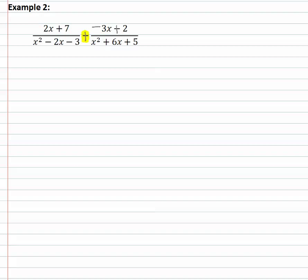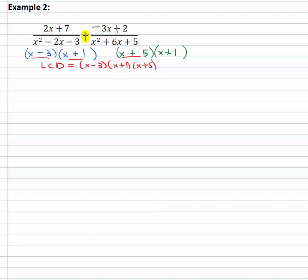Now let's identify our common denominator. The first denominator x² minus 2x minus 3 factors as x times x, with negative 3 and positive 1, giving x minus 3 and x plus 1. The second denominator x² plus 6x plus 5 factors as x times x, and 5 times 1 adds to 6, giving x plus 5 and x plus 1. Our least common denominator uses all unique factors: x minus 3, x plus 1, x plus 5 — x plus 1 is not repeated.